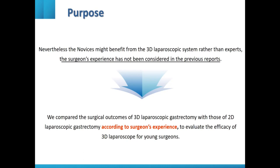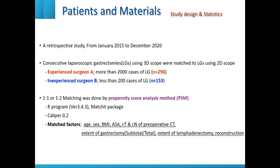For this reason, we added surgeons' experience as a stratification factor and analyzed data to evaluate the efficacy of 3D scope in laparoscopic gastrectomy for gastric cancer. This was a retrospective study including 451 patients. We divided two groups for two surgeons: experienced surgeon A had performed more than 2,000 cases, whereas inexperienced surgeon B had performed fewer than 200 cases prior to this study. Propensity score matching was used to reduce bias, with matched variables including age, sex, BMI, ASA, clinical TN stage, type of gastrectomy, extent of lymphadenectomy, and reconstruction method.